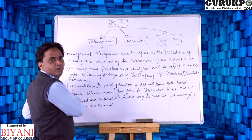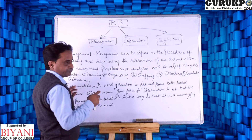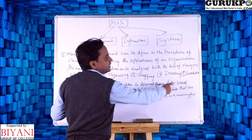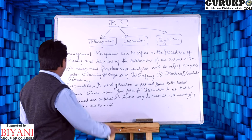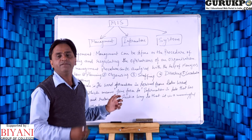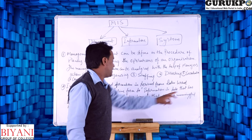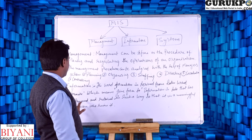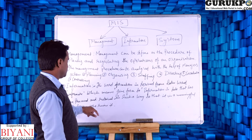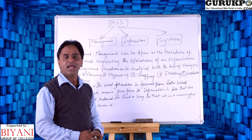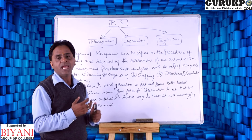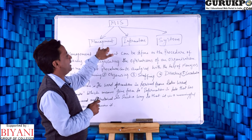The second component is information. The word information is derived from the Latin word 'inform,' which means 'gave form to.' Information is data that has been processed and retrieved in such a way that it is meaningful to present, give, and receive.